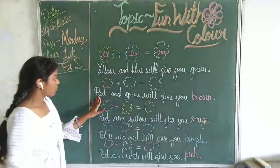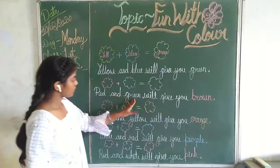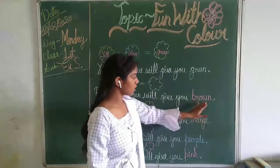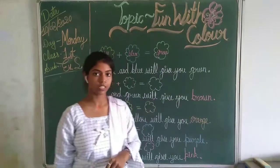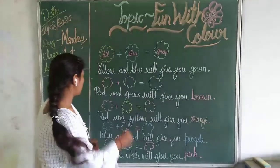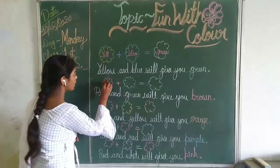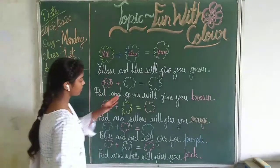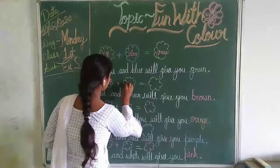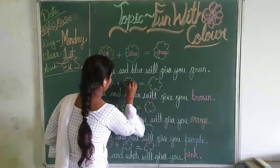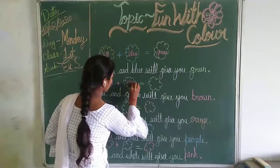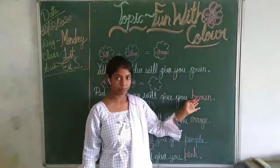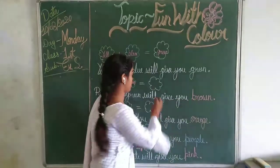Next, red and green will give you which color? Brown color. When we add red with green, it will give which color? Brown color.